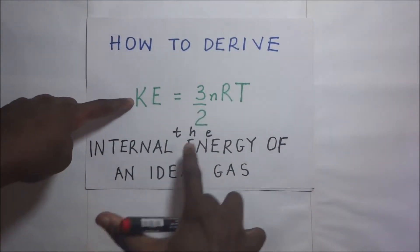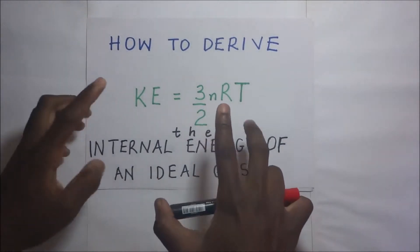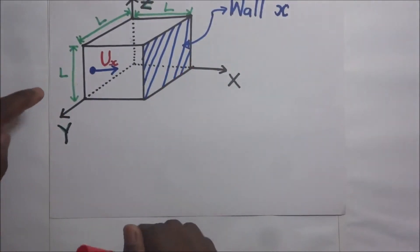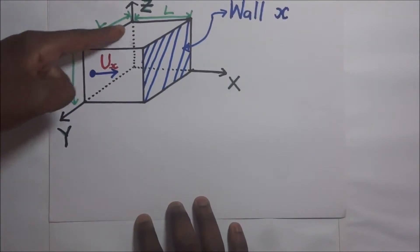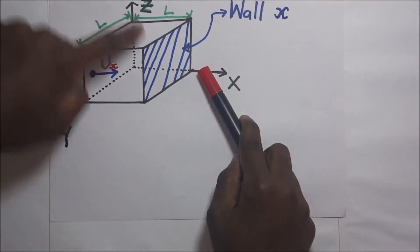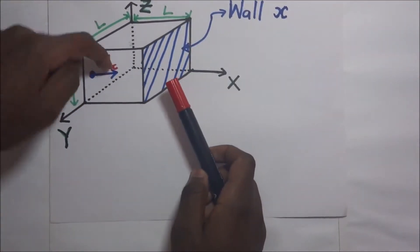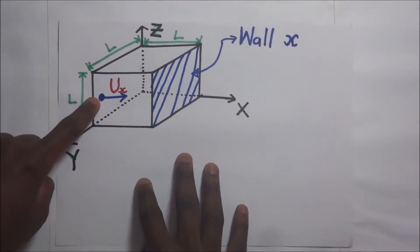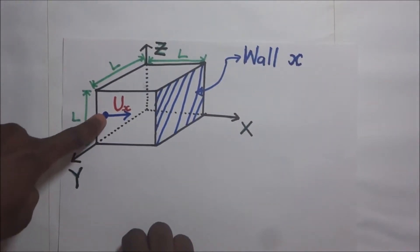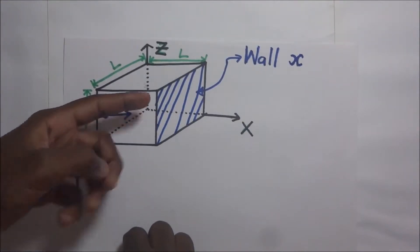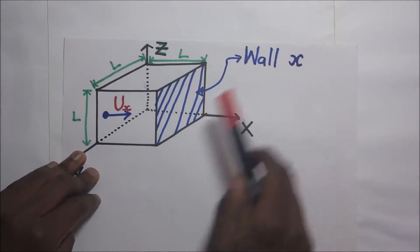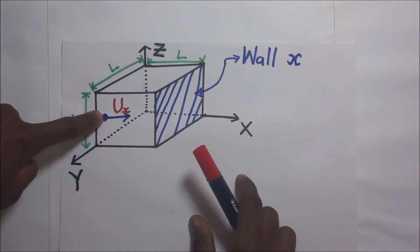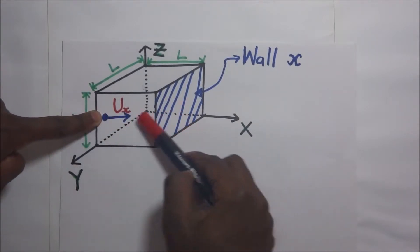To derive the expression for the internal energy of an ideal gas, we use a cuboid — specifically a cube with all sides of length l, so the length, width, and height are all l. Inside this cube we have gas particles, and we single out one particle that moves and collides with wall x, traveling a distance l to the wall and l back.